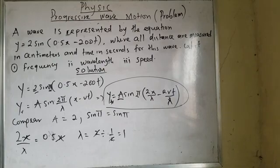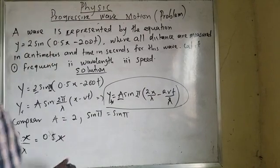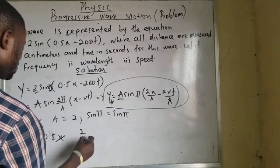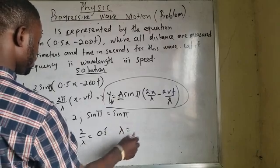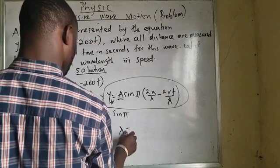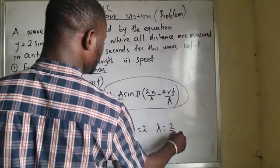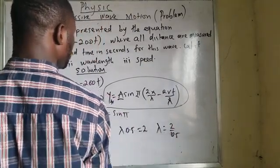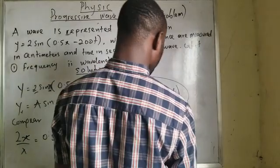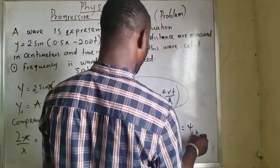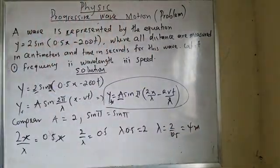I think I have made a mistake — it should be 1 over 5. Let me not rush. I have 2 over lambda equals 0.5, so lambda times 0.5 equals 2. My lambda equals 2 divided by 0.5, which should be 4. That is 4. My lambda is 4 centimeters. Thank you so much for that.